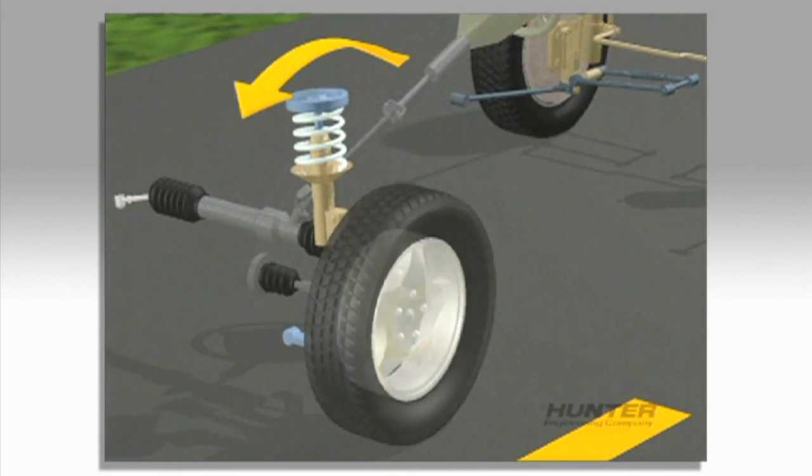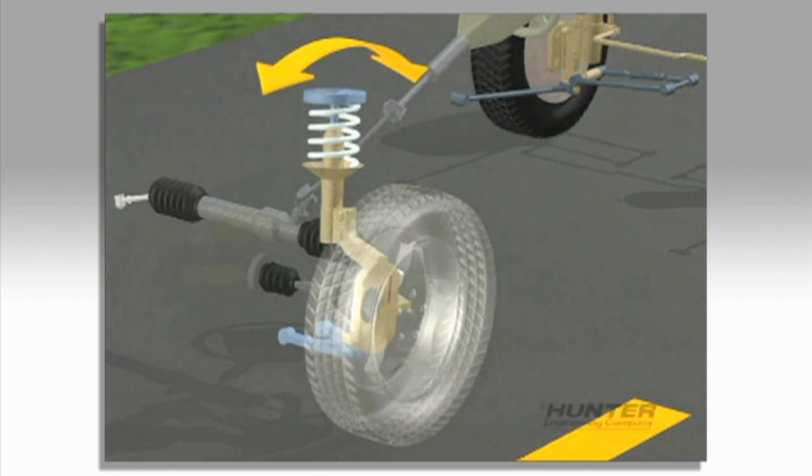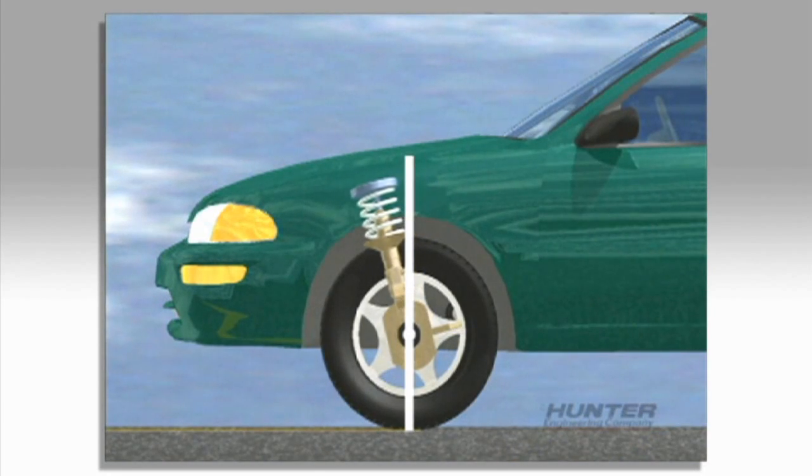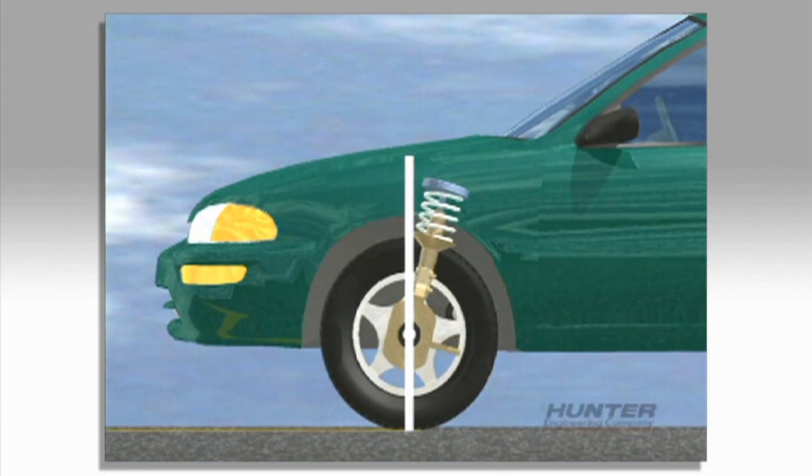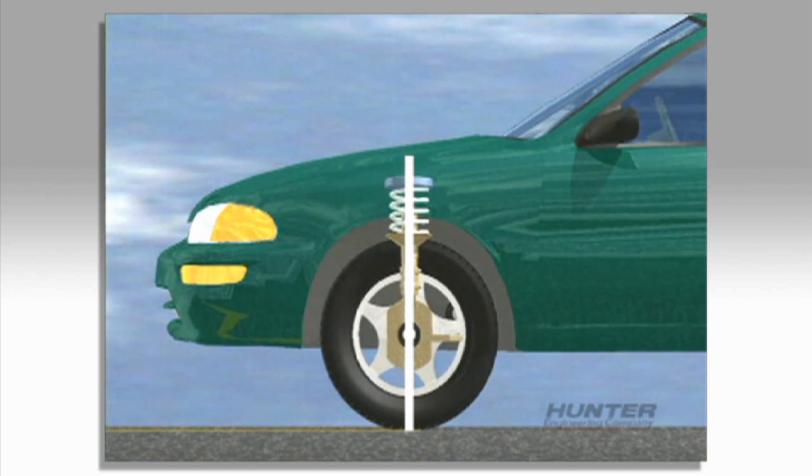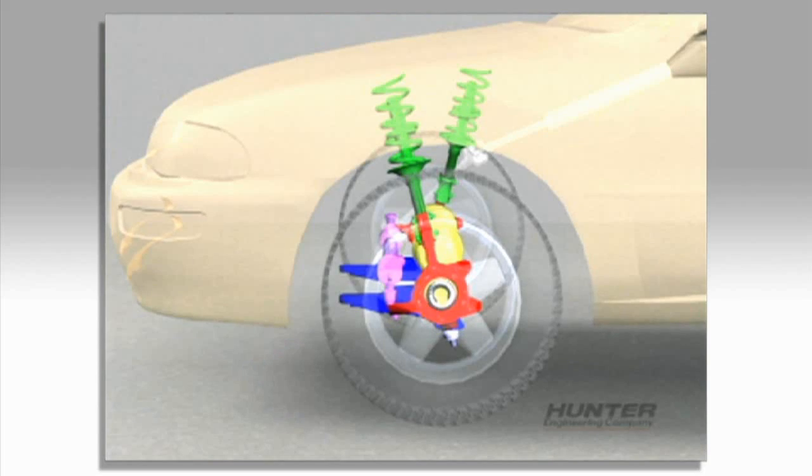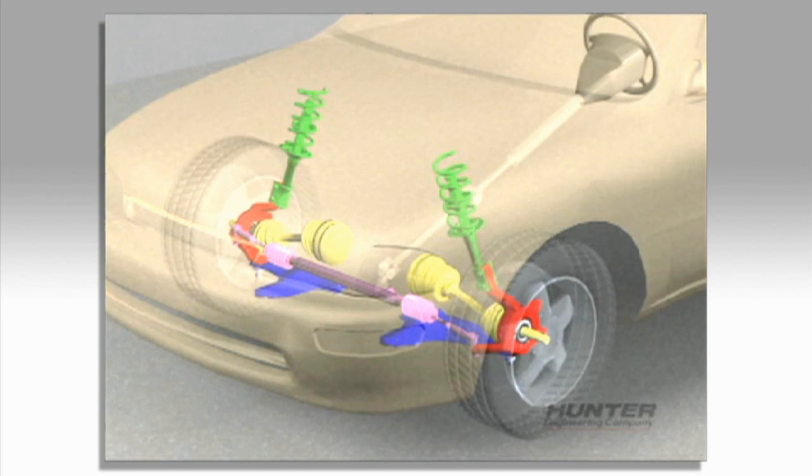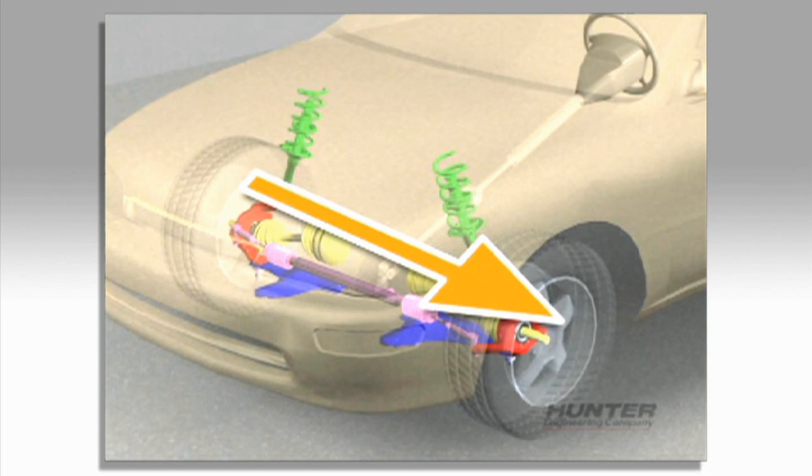Another way to introduce a pull is with errors in caster. Caster, which is the front-to-rear tilt of the steering axis, should be the same on each side. If, for example, the right side is positive and the left side is negative, the front wheels will try to steer the car to the left all the time.